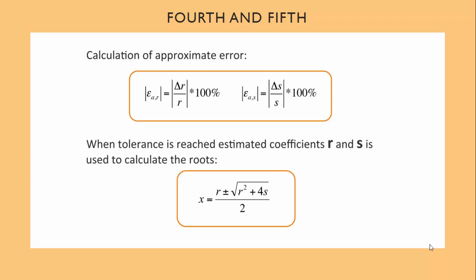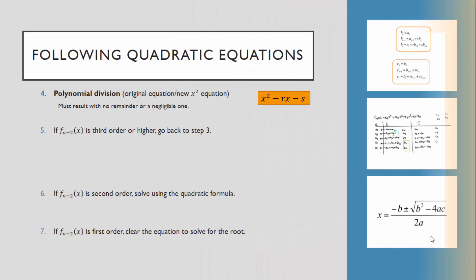When the tolerance is reached, basically when the error is smaller than the tolerance, we will use the last coefficients, r and s, to calculate the roots using this equation. However, you'll need to iterate many times before this happens. That's why this is such a long method to do. After calculating the new quadratic equation with x squared minus rx minus s, we will divide the original equation with this new equation. This division must result with no remainder, or a very small one. And again, if it's a third order, we would go back to step 3. If it's a second order, we would solve this new equation with the quadratic formula to find the other two roots. And if it's a first order, we would just clear the equation to solve for the extra root.